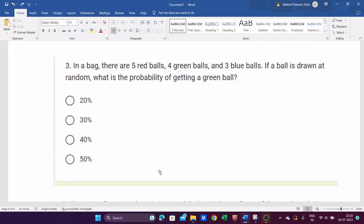See here, it is also asking in terms of percentage. In a bag there are five red, four green, and three blue. You need to find the probability of getting a green ball. So what is the formula of probability? n(E) by n(S), where n(E) means the favorable outcome.